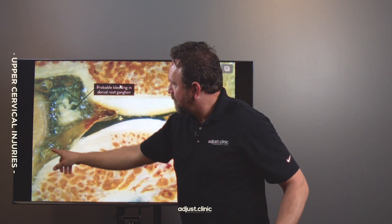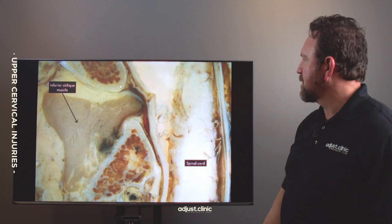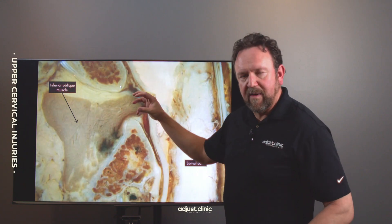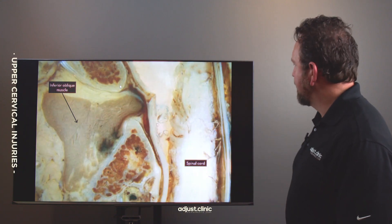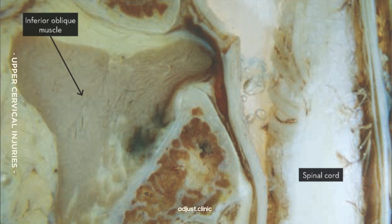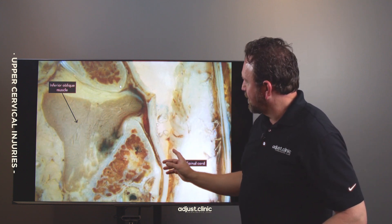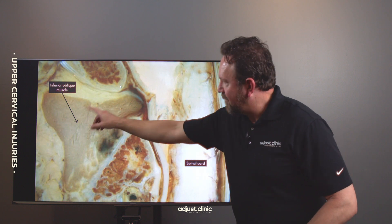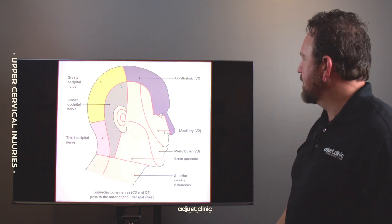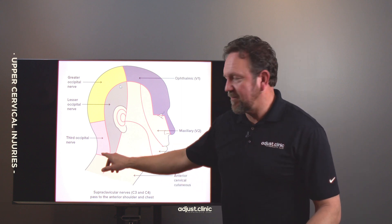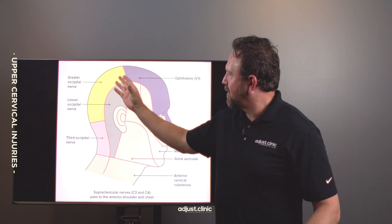This also causes local pain in the upper neck. This is the inferior oblique muscle — here you can see bruising of the muscle as it becomes pinched with that injury. Going a little deeper into the cross section, it shows the spinal cord and how closely associated the spinal cord is with that muscle. Compression of the soft tissue down here can cause headaches up here.